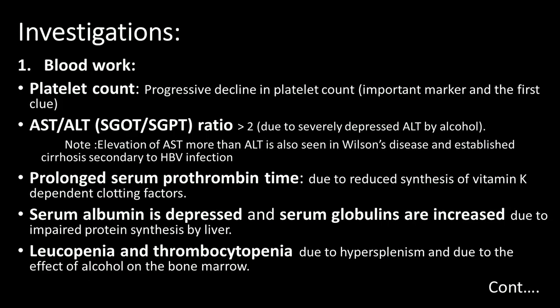Investigations. Blood work: a progressive decline in platelet count is an important marker and the first clue for the evolution of cirrhosis in a patient with chronic liver disease. The AST/ALT (SGOT/SGPT) ratio is greater than 2 in alcoholic patients, due to severely depressed ALT caused by alcohol.